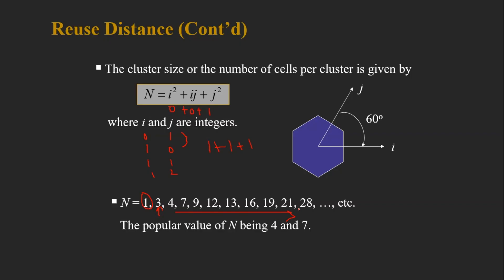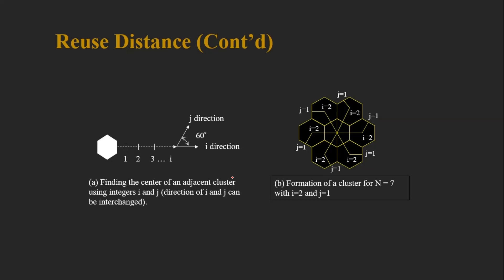Depending on the required cluster size, we determine which value fits a particular geographical area. To identify the center of a co-channel cell, given i and j, move j steps in one direction at 60 degrees, then move i steps in a straight line — you will reach the center of the co-channel cell. This method works for all valid i and j combinations.